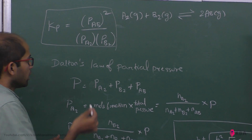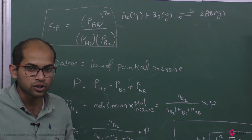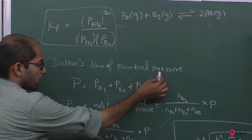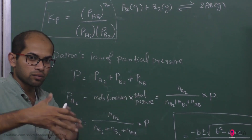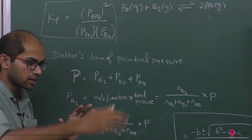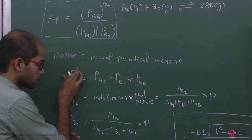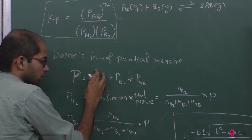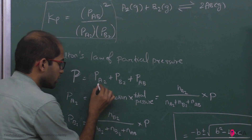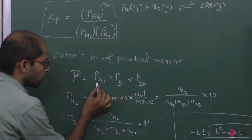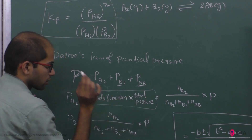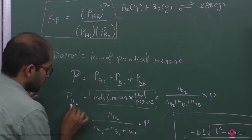We calculate the mole fraction into total pressure. By Dalton's law, partial pressure equals mole fraction times total pressure. So P of A₂ equals mole fraction of A₂ times total pressure P.